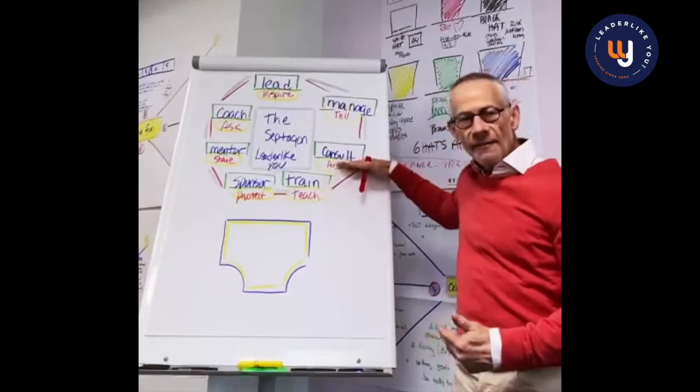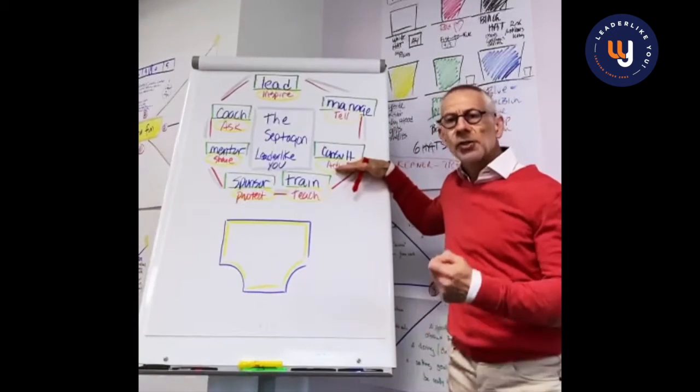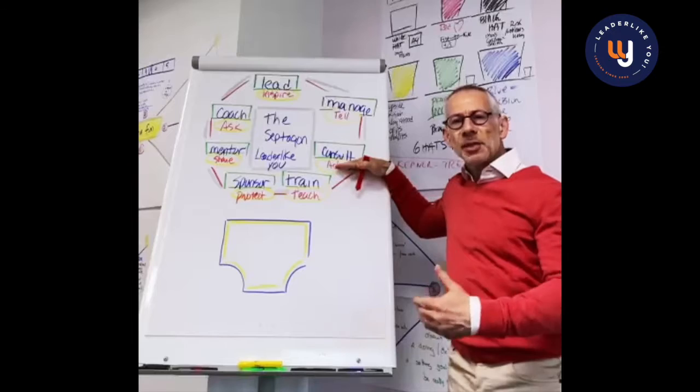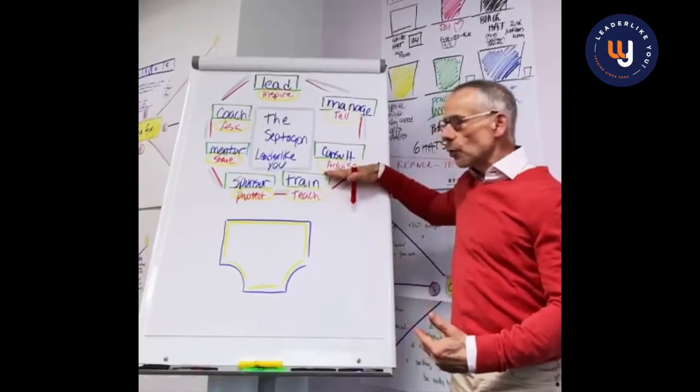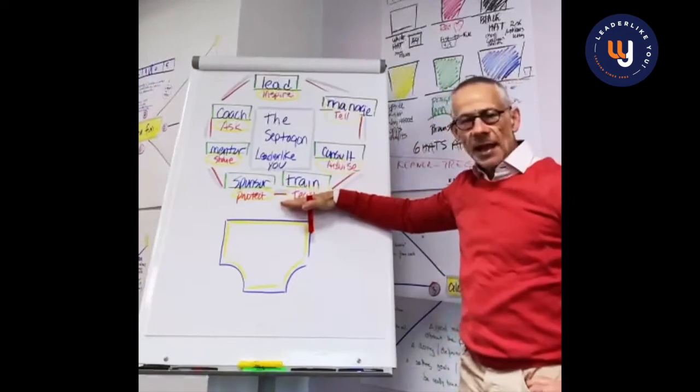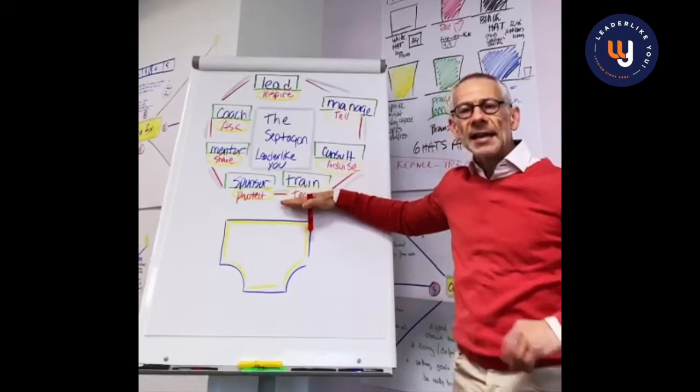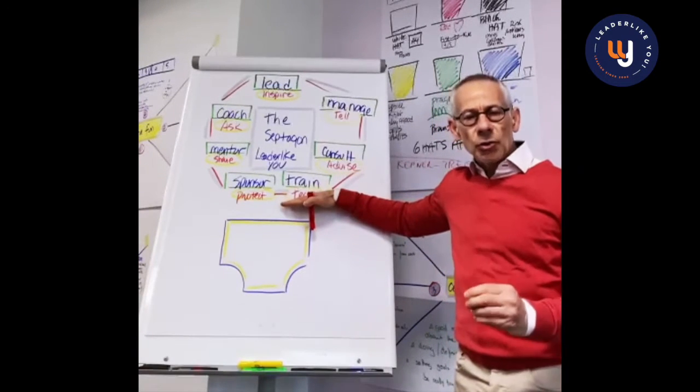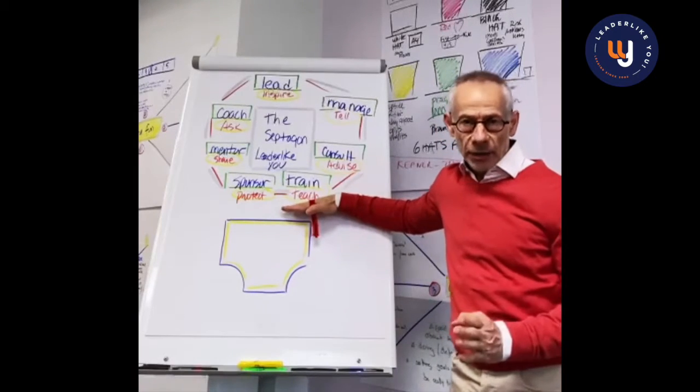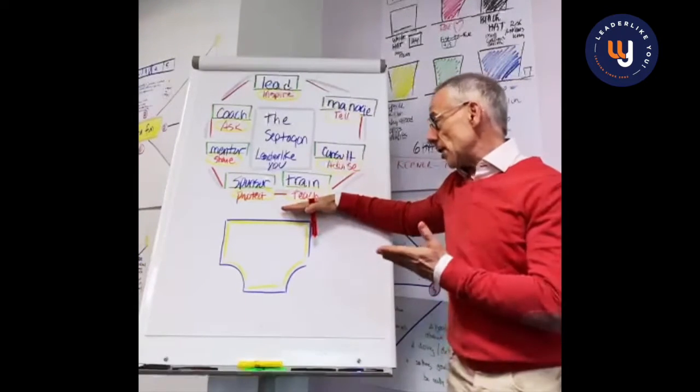Then we have inside us the consultant. The consultant knows many things and shares best practices, tips, and tools with teams. So the verb here is advise. Moving down the Septagon, we have the skill of training your people and making sure that they get the skills and the tools and the knowledge they need. That is the ability to impart knowledge, and that's called teach.